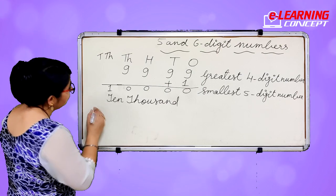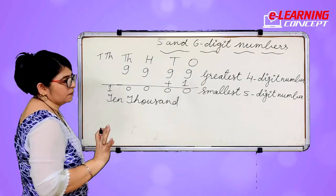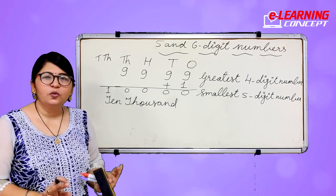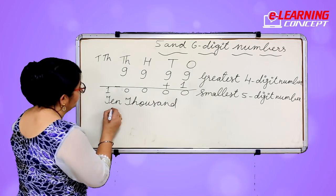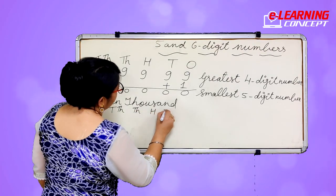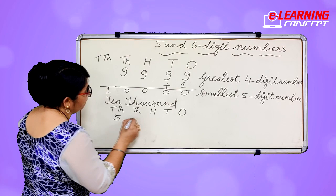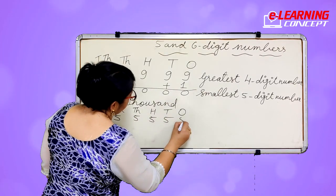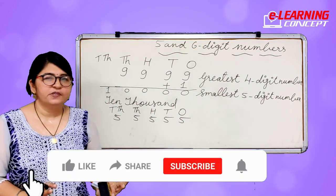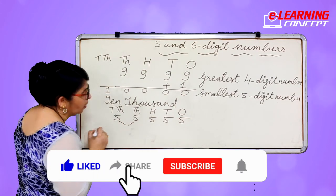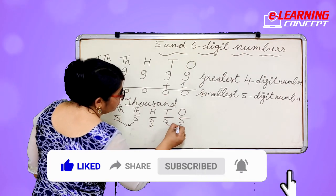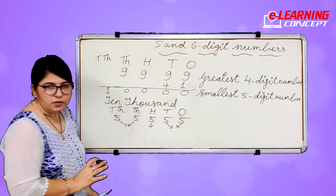Now I will tell you how to read 5 digit numbers. There are 3 steps to read 5 digit numbers. The 1st step comes from thousands, the 2nd step comes from hundreds, and the 3rd step comes from tens and ones together.